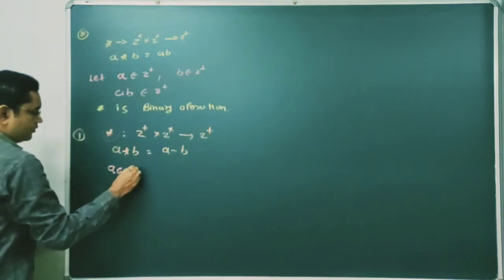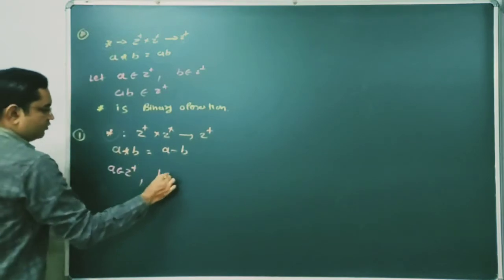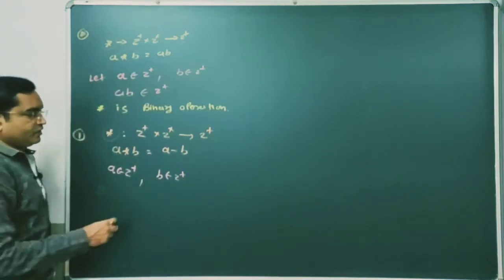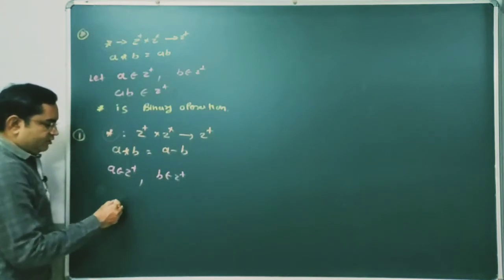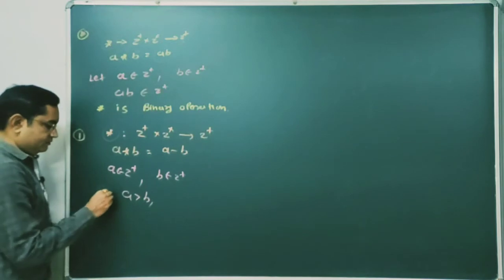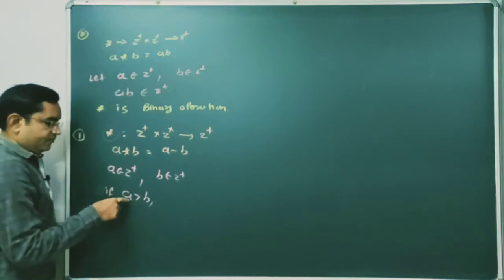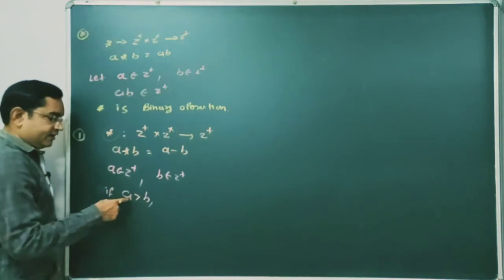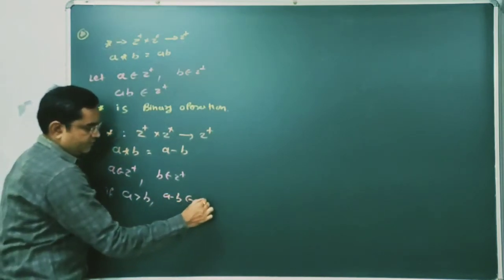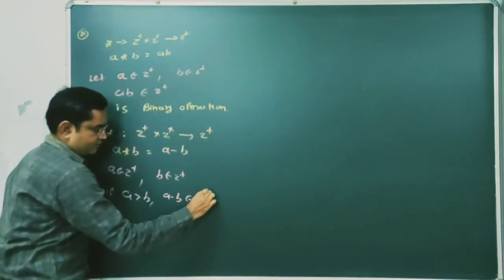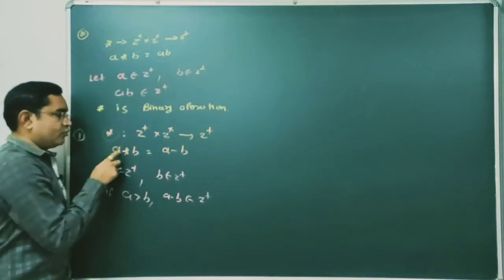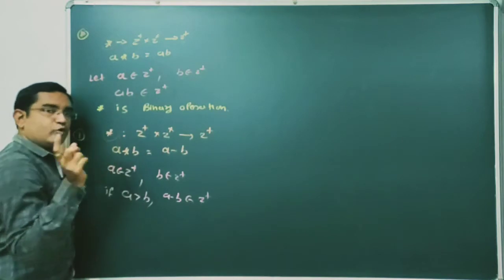Here a ∈ Z+ and b ∈ Z+, both are elements of the set of positive integers. If we consider a > b, both are positive integers and a's value is greater. Then a − b will always belong to Z+. So for this case, if a > b, this binary operation star is a binary operation.